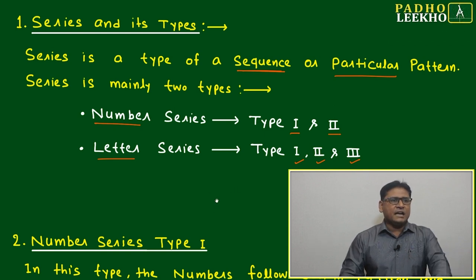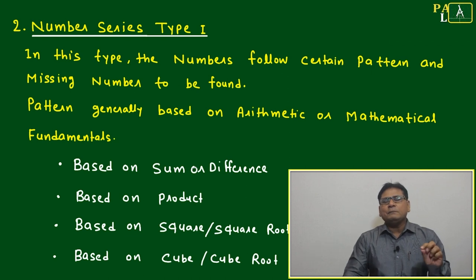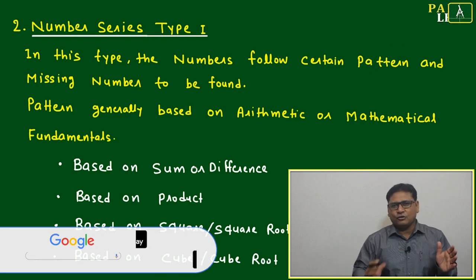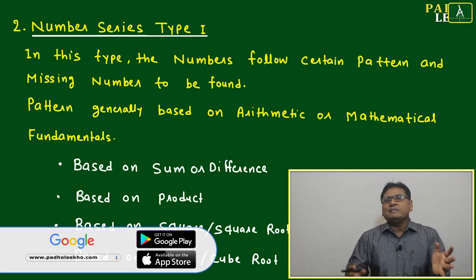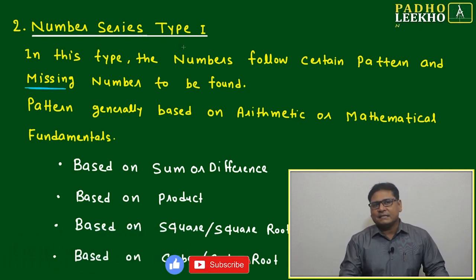This will start with number series type 1. It is very famous or you can say very typical type of questions when some numbers will be given in form of particular fashion or in form of sequence and one number or one slot will be missing, means you have to find the missing number. This is your type 1 number series.